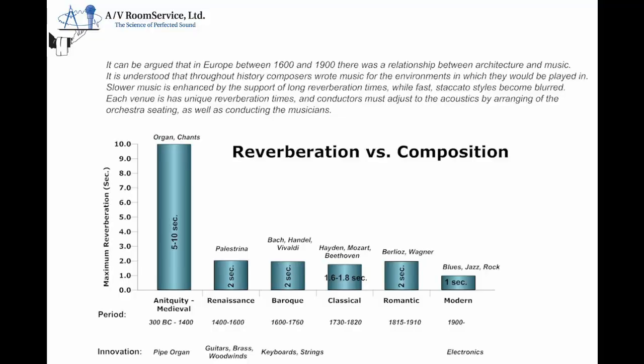So is reverberation friend or foe? Well, in a performance venue it would be friend. In this chart we can see that especially back in medieval times, when all they had was stone to work with and they had organ and chants — because those large cavernous stone buildings did not bode well for anything percussive, staccato, or transient, but were beautiful for organ and chants: things with long sustaining notes that supported, added to, and made the sound richer, fuller, and gorgeous.